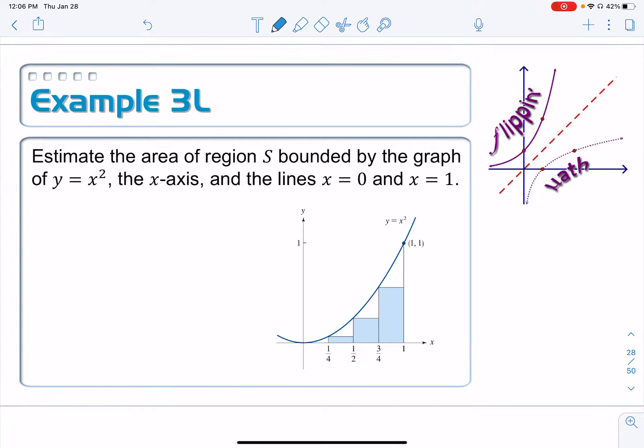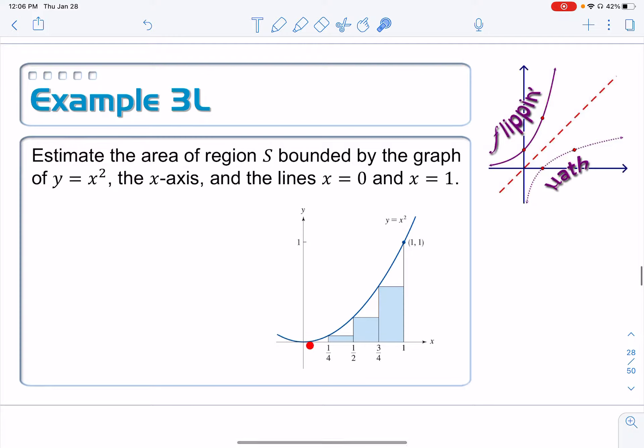When you find the area of a rectangle, you need a base length and you need a height. Base times height, length times width. And our base length here is coming from the partition that we decided. We're going to break it up into four pieces, so the width of each one of these things is one-fourth. We're calling that thing delta x, equal to one-fourth. There's the width.